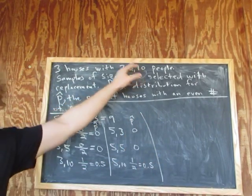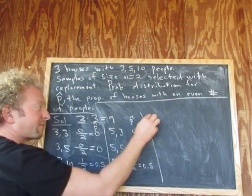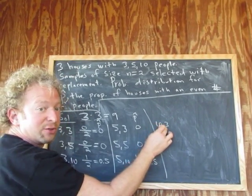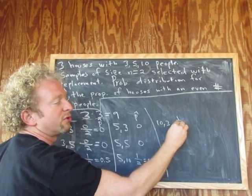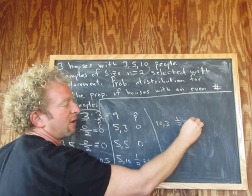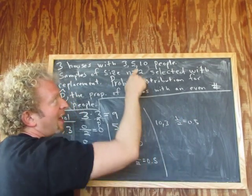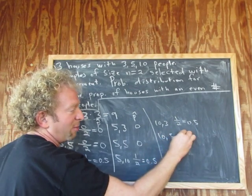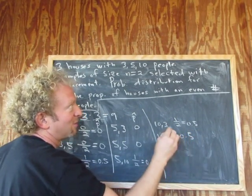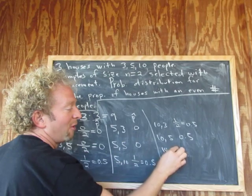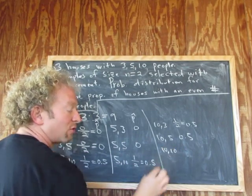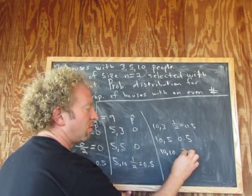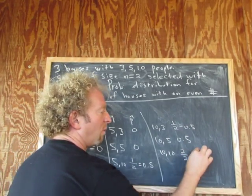Ten and three: one even number out of two numbers, so p-hat equals 0.5. Ten and five: again, 0.5 — one even number. And ten and ten: this time we have two even numbers out of two numbers, so two over two gives us p-hat equals 1.